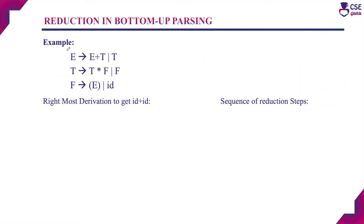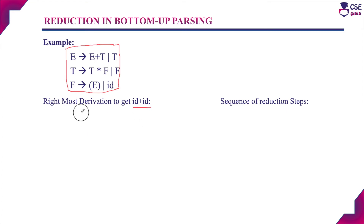Consider a given grammar. For this grammar, we will implement the rightmost derivation to derive the input string id plus id. The rightmost derivation starts with the start symbol E. To derive id plus id, we apply the production rule E derives E plus T. Rightmost derivation always chooses the rightmost non-terminal to apply the production rule. Here the rightmost non-terminal is T, so we apply the production rule T derives F.